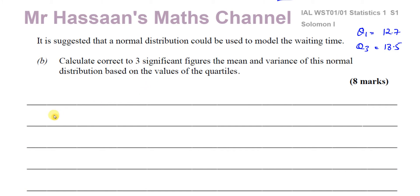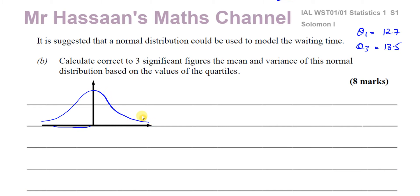The normal distribution curve has a bell shape. We know that the lower quartile Q1 is somewhere where 25% of the data is less than it - that area is 0.25. And Q3, the upper quartile, has 25% of the data above it. So our value of Q1 is 12.7 and our value of Q3 is 18.5. We need to standardize these scores according to the areas to the left and to the right of these points.